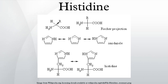In carbonic anhydrases, a histidine proton shuttle is utilized to rapidly shuttle protons away from a zinc-bound water molecule to quickly regenerate the active form of the enzyme.